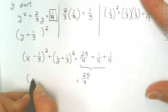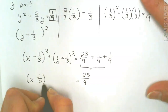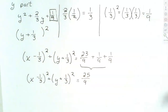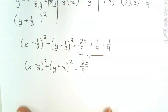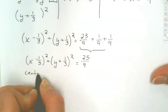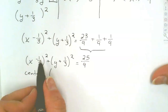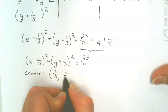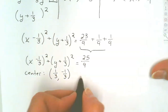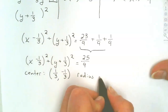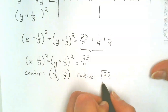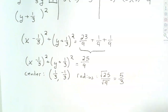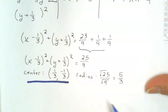It is a circle. Switching signs for the center: positive 1/3, negative 1/3 — center is (1/3, -1/3). The radius is the square root of 25/9, which is 5/3.